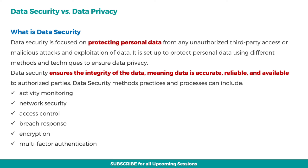Data security is focused on protecting personal data from any unauthorized third-party access or malicious attacks and exploitation of data. It is set up to protect personal data using different methods and techniques to ensure data privacy. Data security ensures the integrity of the data, meaning data is accurate, reliable, and available to authorized parties. Data security methods, practices and processes can include the following: activity monitoring, network security, access control, breach response, encryption, and multi-factor authentication.